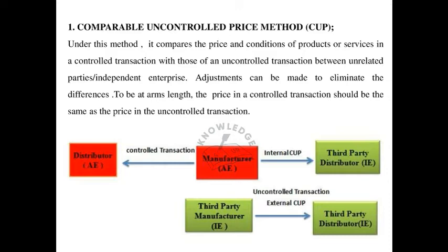Under the Comparable Uncontrolled Price (CUP) method, it compares the price and conditions of products or services in a controlled transaction with those of an uncontrolled transaction between unrelated parties or independent enterprises. A controlled transaction means the transaction between associated enterprises, while an uncontrolled transaction means the transaction between third parties. Adjustments can be made to eliminate the differences according to the arm length price. The price in a controlled transaction should be the same as the price in the uncontrolled transaction.